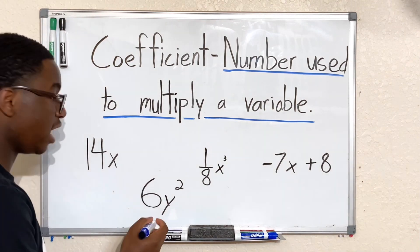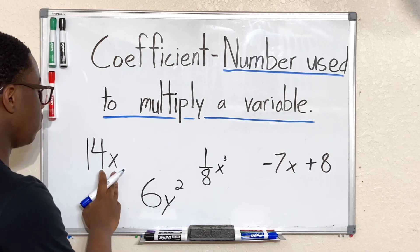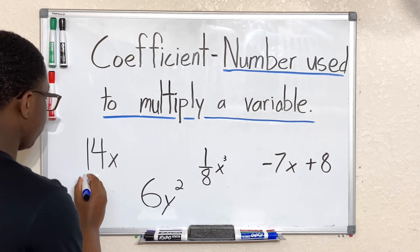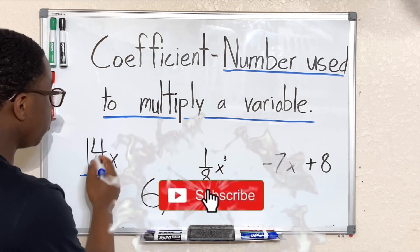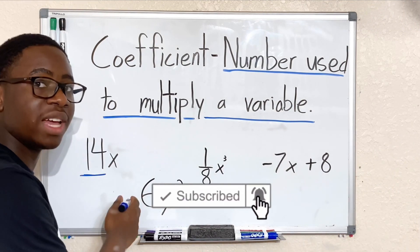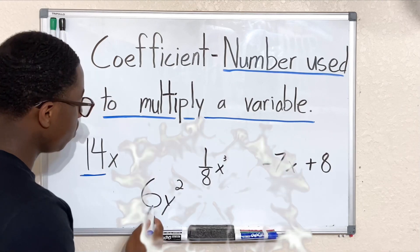Here we have 14x. We know that x is our variable, so that leaves us with 14. So 14 is going to be our coefficient because 14 is what is going to multiply x, our variable. Here we have 6y squared.